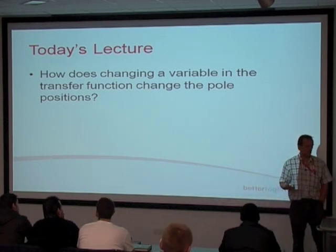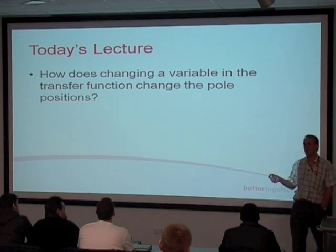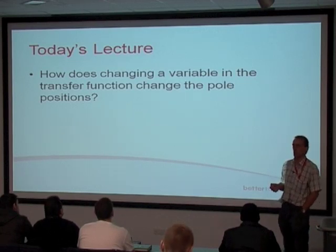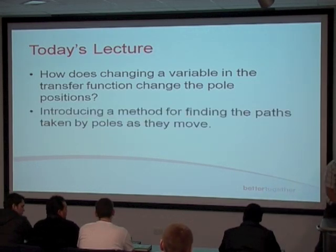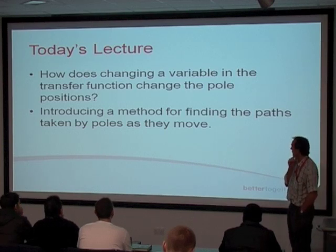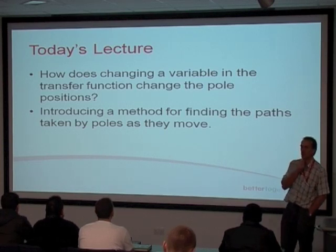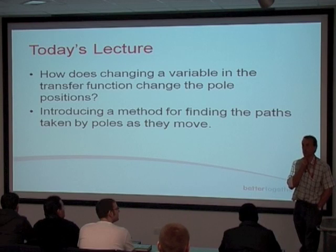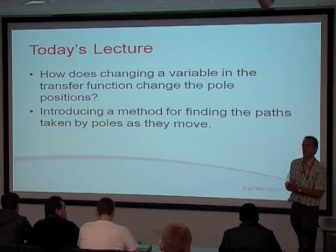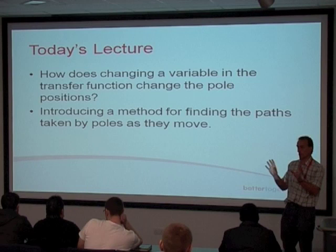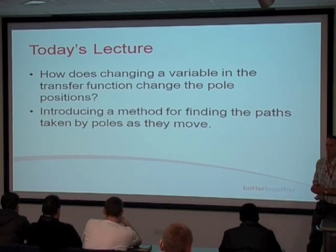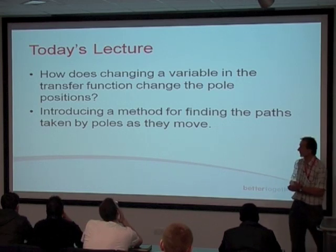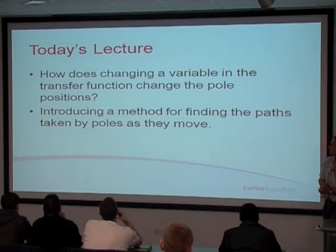What I want to answer is: how does changing a variable in the transfer function change the pole positions? We're going to introduce a method for finding the paths taken by the poles as they move around. When we change a variable in our equation, the roots of that equation are going to change, and as a consequence the pole positions are going to move around.